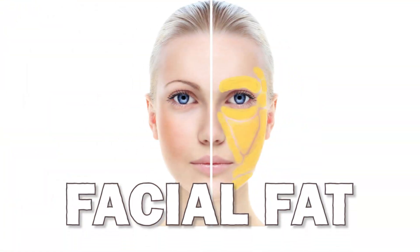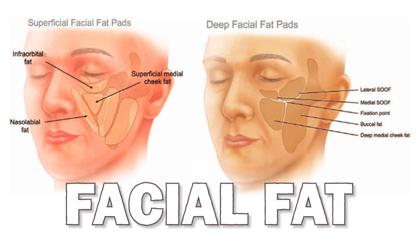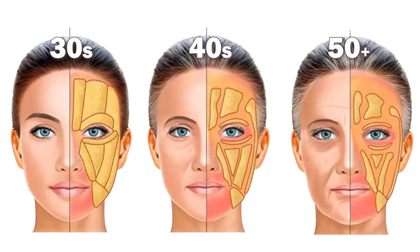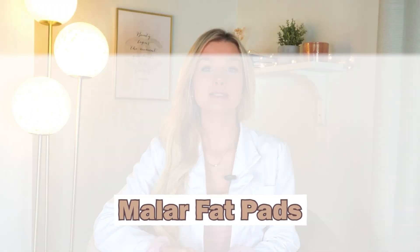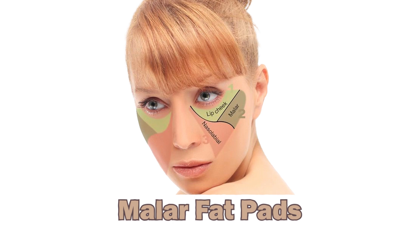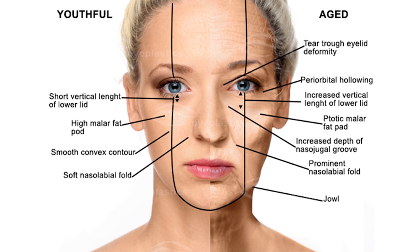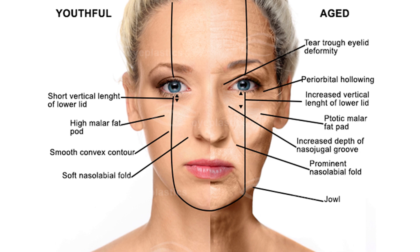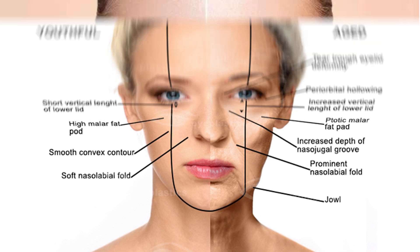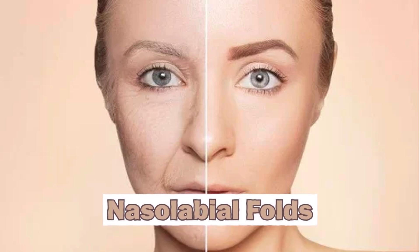Let's talk about our facial fat. This fat is divided into two categories: superficial and deep. It plays a crucial role in providing volume and shaping our face. Think of young faces as well-filled cushions, precisely in the right places. As the years go by, these fat pads begin to deplete, leading to a loss of support and sagging of the soft tissues. There's one particular fat pad we need to pay attention to: the malar fat pad. This plays a significant role in the aging of our face, especially in the mid-face area. When this fat pad thins, a distinct separation forms between the lower eyelids and the cheeks, and the cheeks also start to sag downward. The reduction of fat pads also plays a significant role in the formation of deep laugh lines, known as nasolabial folds. As time goes on, our fat pads become emptier, resulting in the formation of more compartments in the face.